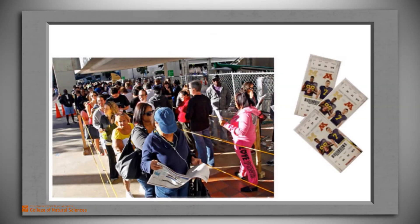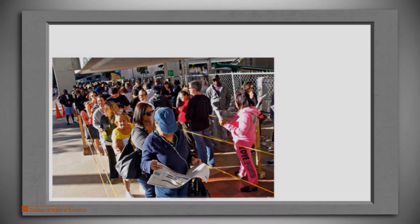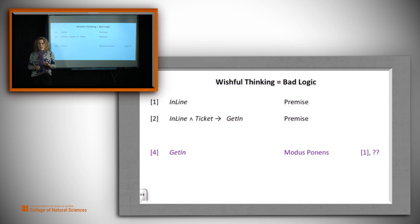If you're in line and you've got a ticket, you'll get into the game. Great. I'm first in line. I'm in. Gosh, they may be about to get really disappointed at the front of the line. Let's see what went wrong. We'll call this one wishful thinking. What we're told is in line and that in line and ticket gets you in. And the reasoning somehow got to get in. Let's try to imagine how they might have done that. Modus ponens with in line and what? Two.